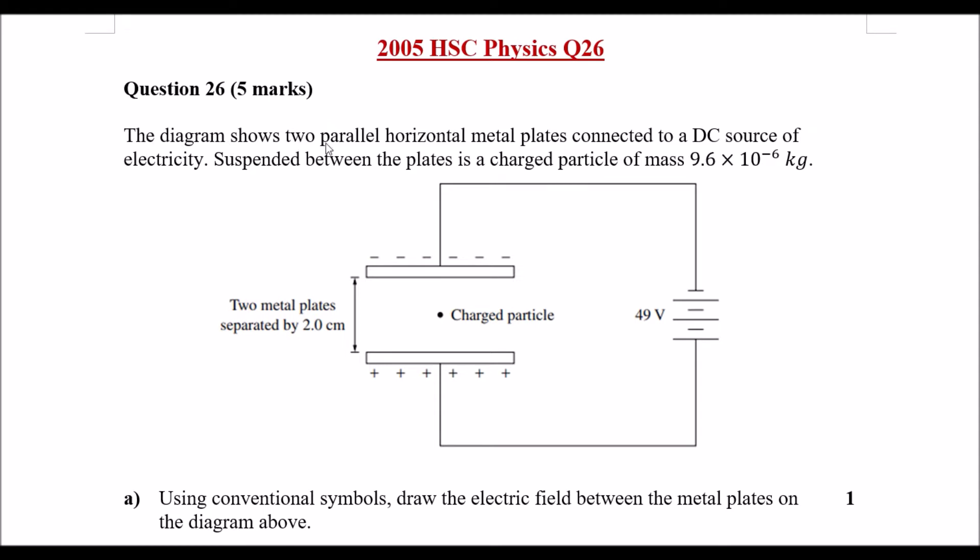The diagram shows two parallel horizontal metal plates connected to a DC source of electricity. Suspended between the plates is a charged particle of mass 9.6 times 10 to the power of negative 6 kilograms. We can see the two charged plates are separated by a distance of 2 centimeters. The top side is negative, the bottom side is positive.